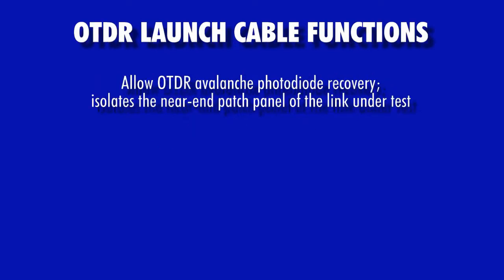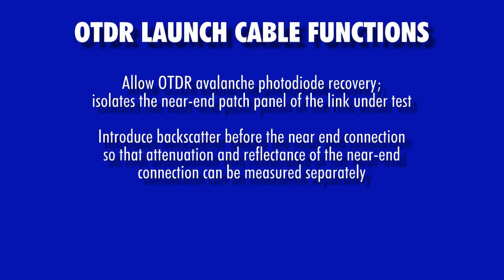OTDR launch cables perform two key functions. First, OTDR launch cables allow the OTDR's avalanche photodiode to recover from the reflection caused by the OTDR port, so that the dead zone caused by the OTDR port can be sufficiently isolated from the dead zone caused by the connection at the near end of the fiber under test. Second, OTDR launch cables introduce backscatter before the near-end patch panel so that the loss and/or reflectance of the near-end patch panel can be measured.